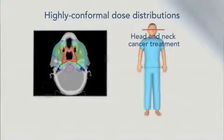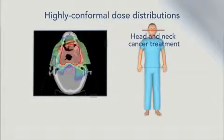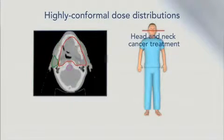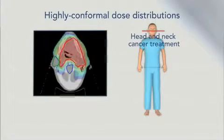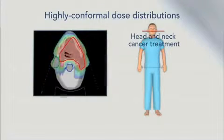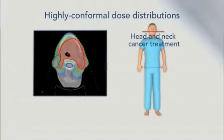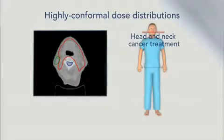Shown here are CT scans with overlaid structures and dose levels from a head and neck cancer treatment plan. The tumor, indicated by the red outline, is covered by the prescription dose, shown by the solid red color. The adjacent blue spinal cord and green parotid gland receive a very low dose. Our unique technique enables a sharp distinction between tumor dose and dose to nearby critical tissues. The parotid glands produce saliva, and maintaining their function after radiotherapy treatment has always been a difficult challenge.